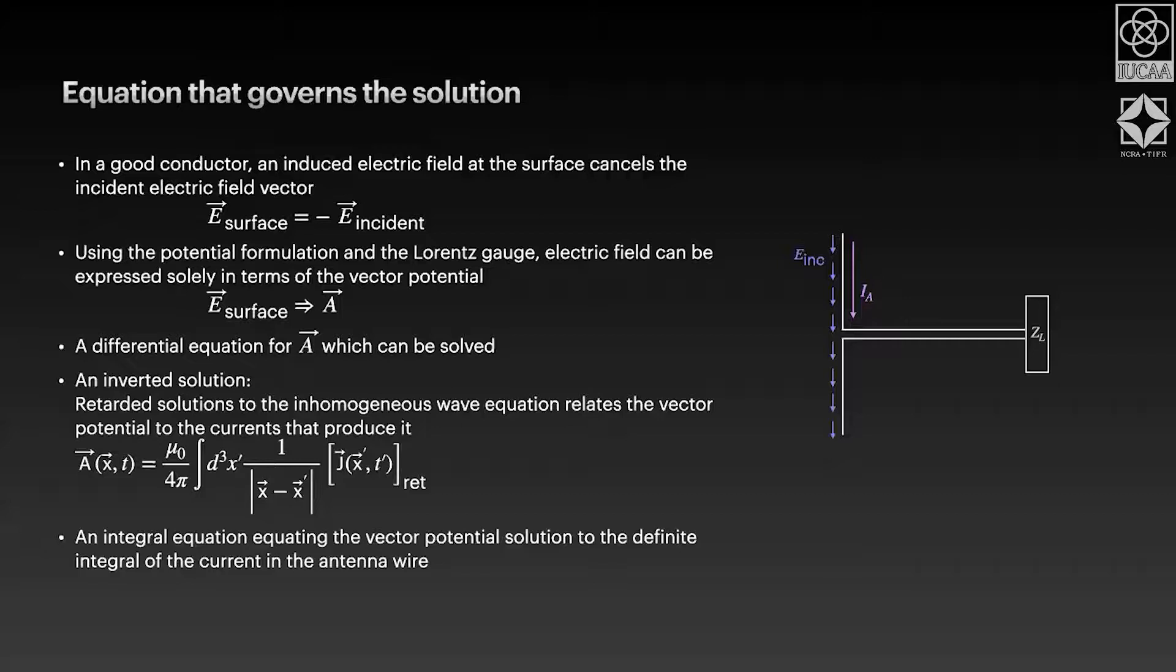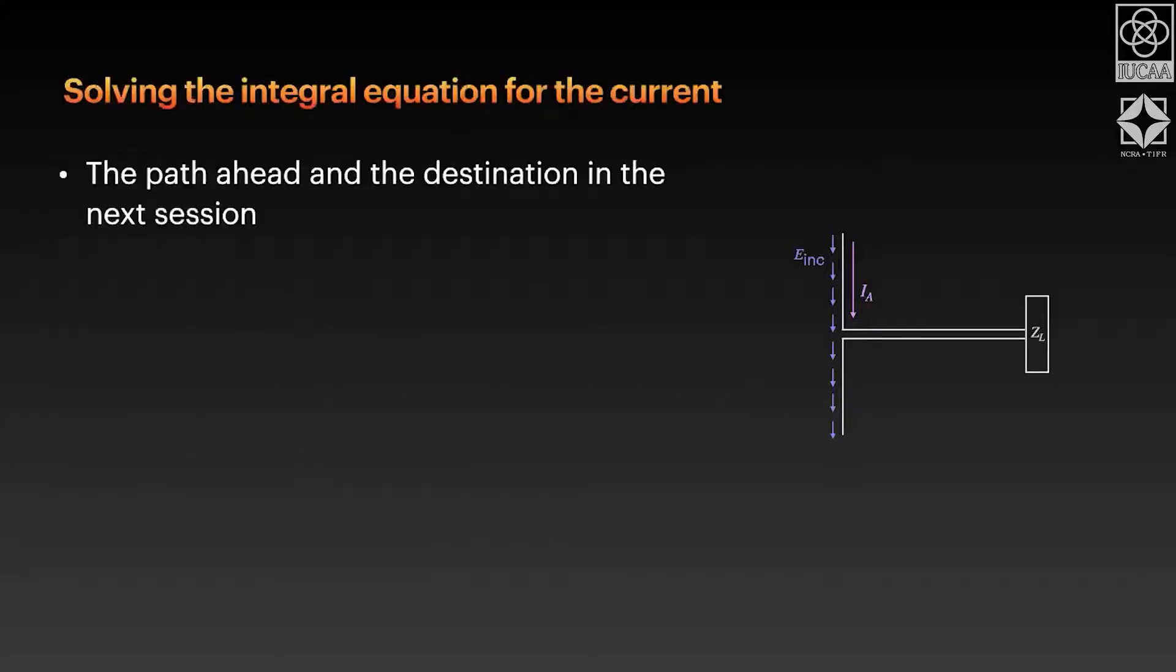And once you equate these two, the vector potential that you've obtained from the incident electric field and the vector potential due to this general wave equation solution, you'll have an integral equation that you need to solve to get the current in the antenna. This is how far the worksheet will take you. To actually solve it and apply the boundary condition, it turns out to be a lot more complicated. You'll have to convert these into algebraic equations and get an approximate solution at best.